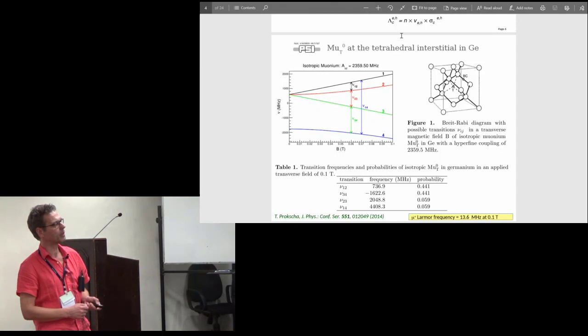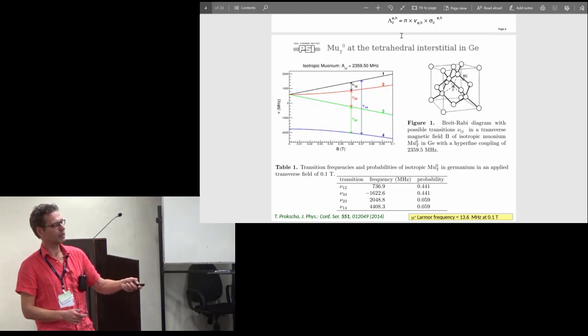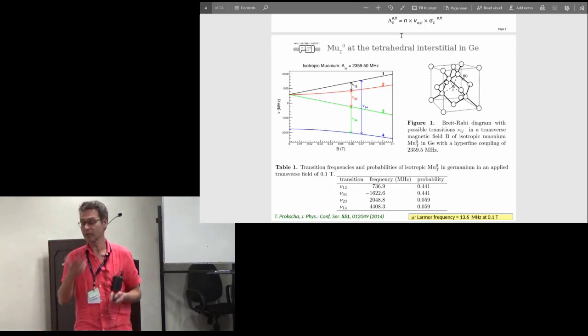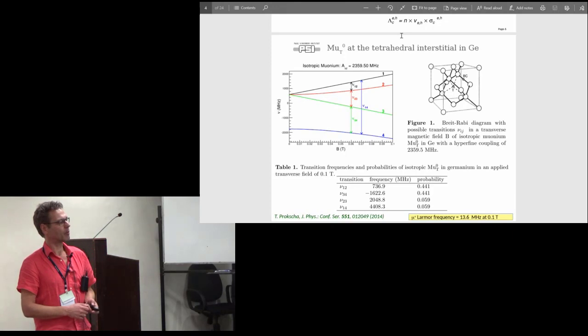We see here the Breit-Rabi diagram. If you increase the magnetic field you see here the hyperfine states. In a muSR experiment you can typically see these four transitions. If you apply a field of about 0.1 tesla, these frequencies you can see here are much higher than the Larmor frequency of the muon, so it can be easily distinguished from the muons in an environment where you have a diamagnetic environment.